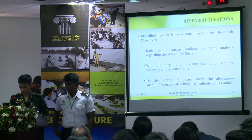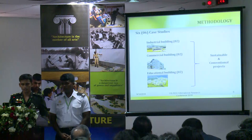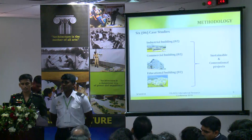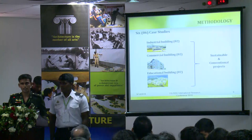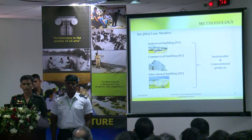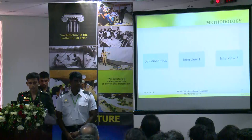To cover our research objectives as well as these research questions, we did a deep case study. For that, we selected three types of buildings. For each type of building, we selected one sustainable project as well as one conventional project. According to our topic, we selected specific materials for the sustainable construction sites as well as the general materials for the conventional project. After that, we started to collect our data from questionnaires as well as interviews.